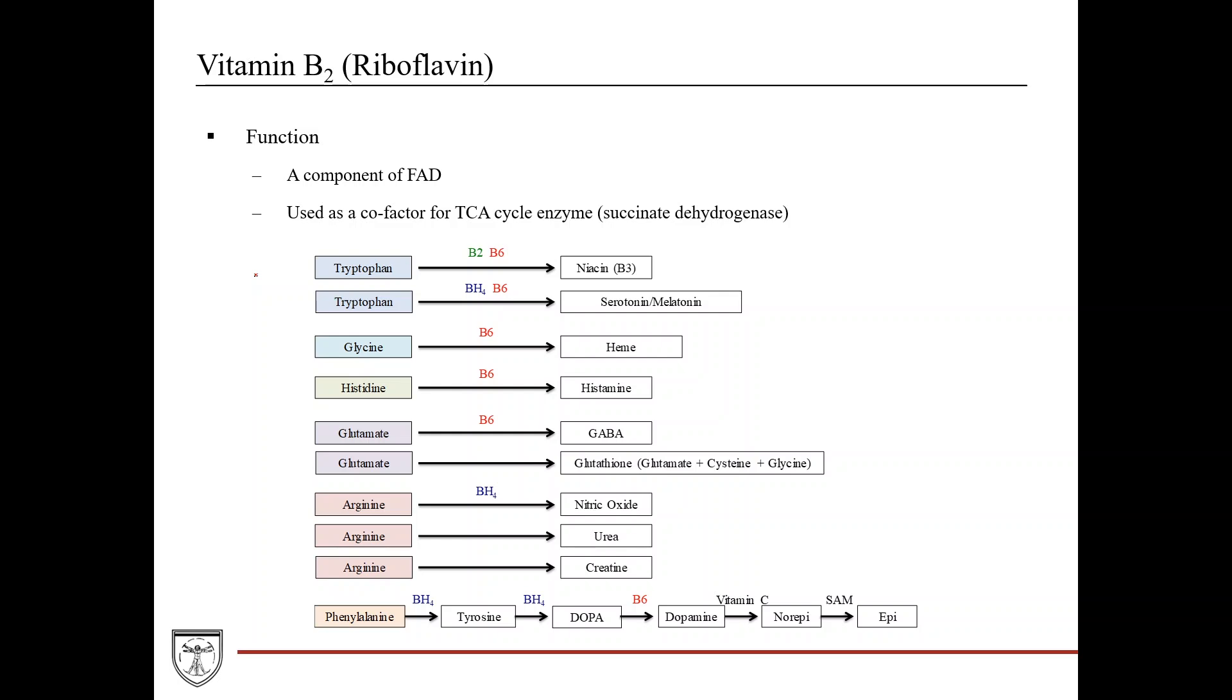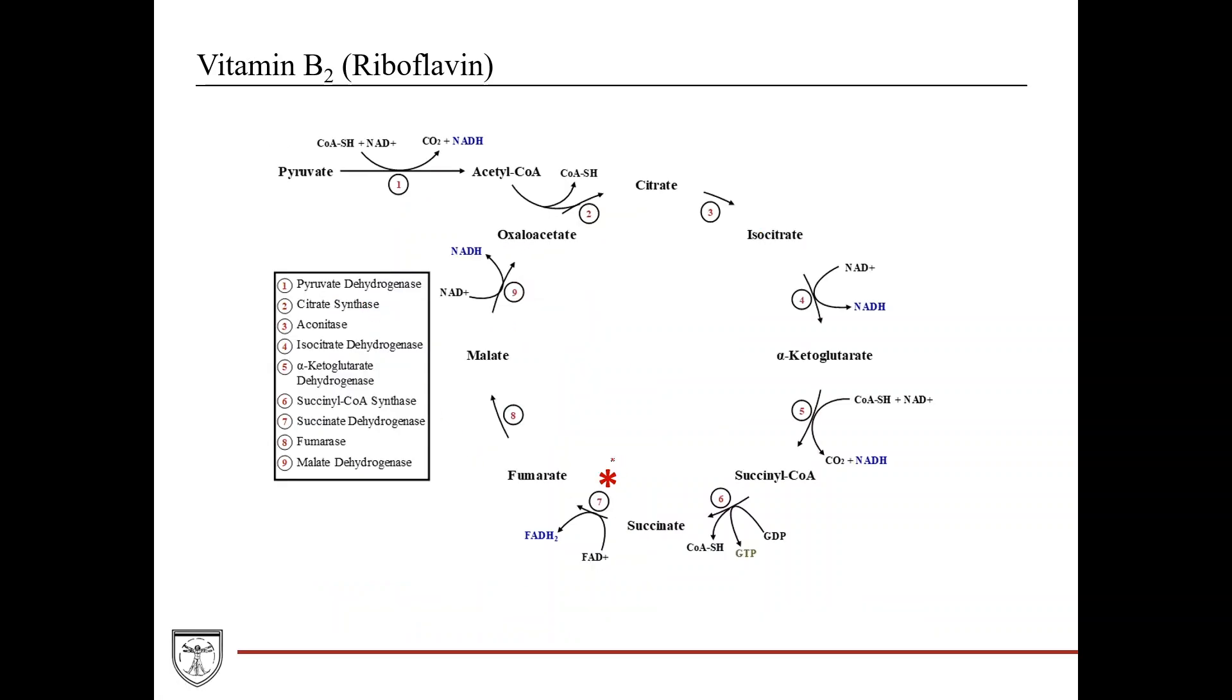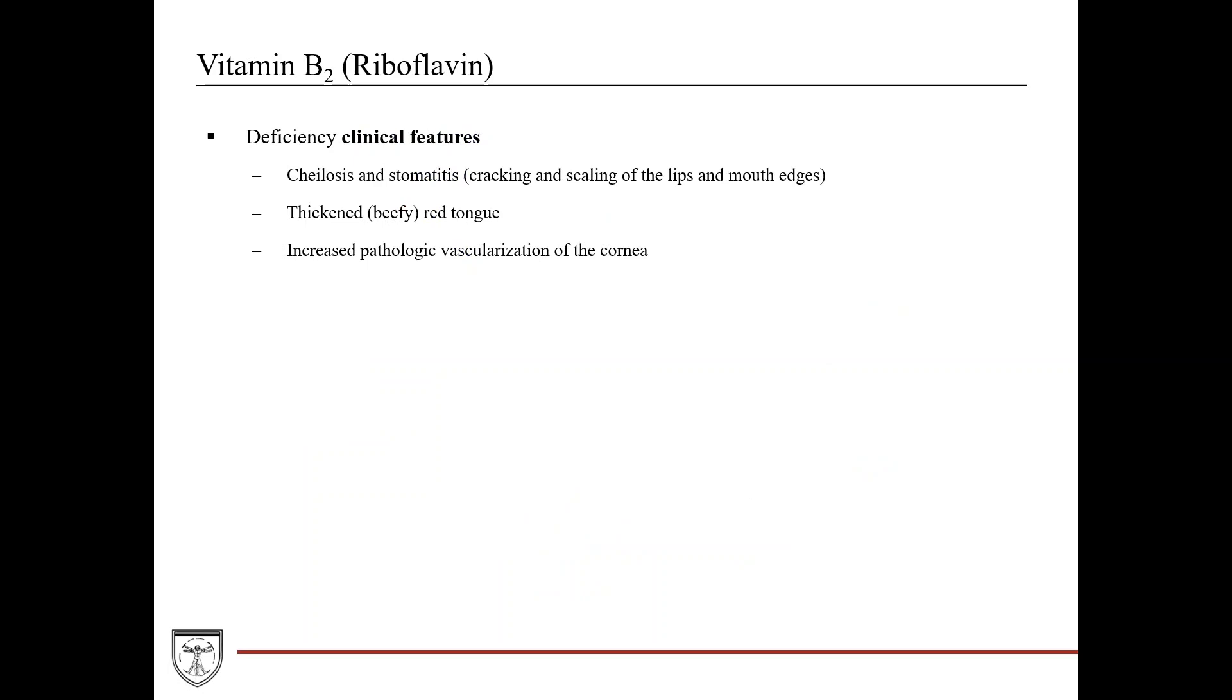Vitamin B2, also known as riboflavin. Its function is that it's a component of FAD. It's used in the synthesis of niacin from tryptophan, and it's used as a cofactor for the TCA cycle enzyme succinate dehydrogenase. If you come over here to this reaction, when you convert succinate into fumarate, that enzyme, succinate dehydrogenase, requires vitamin B2 as a cofactor, and you actually produce an FADH2 from that reaction.